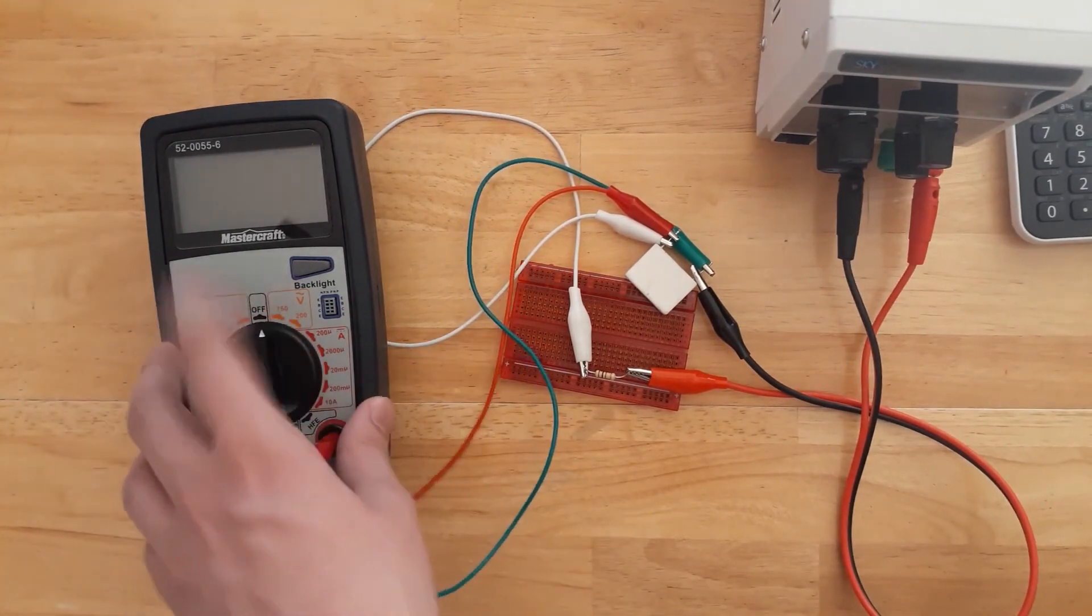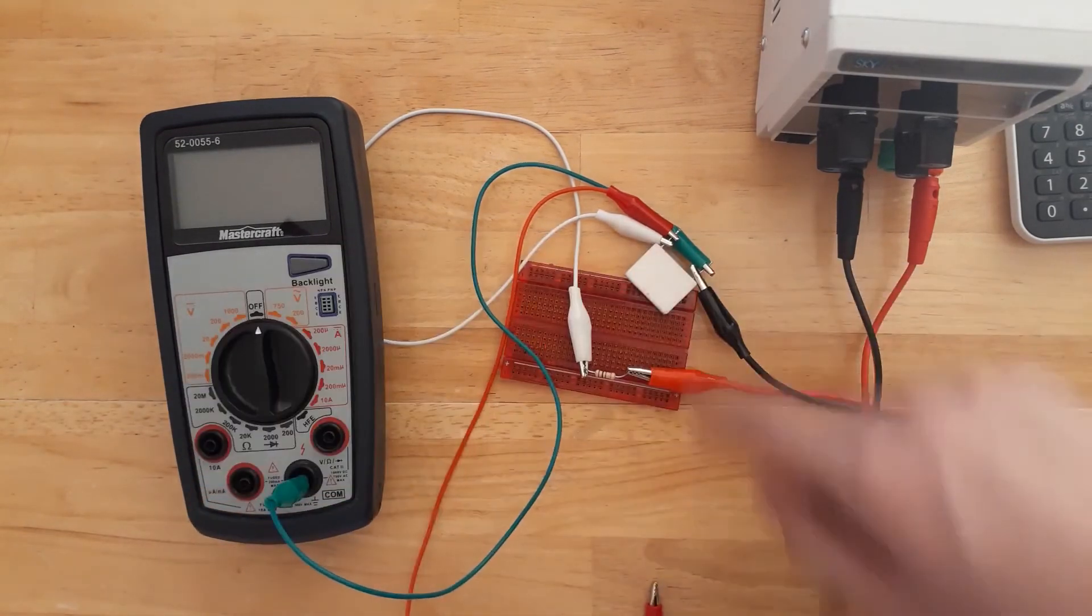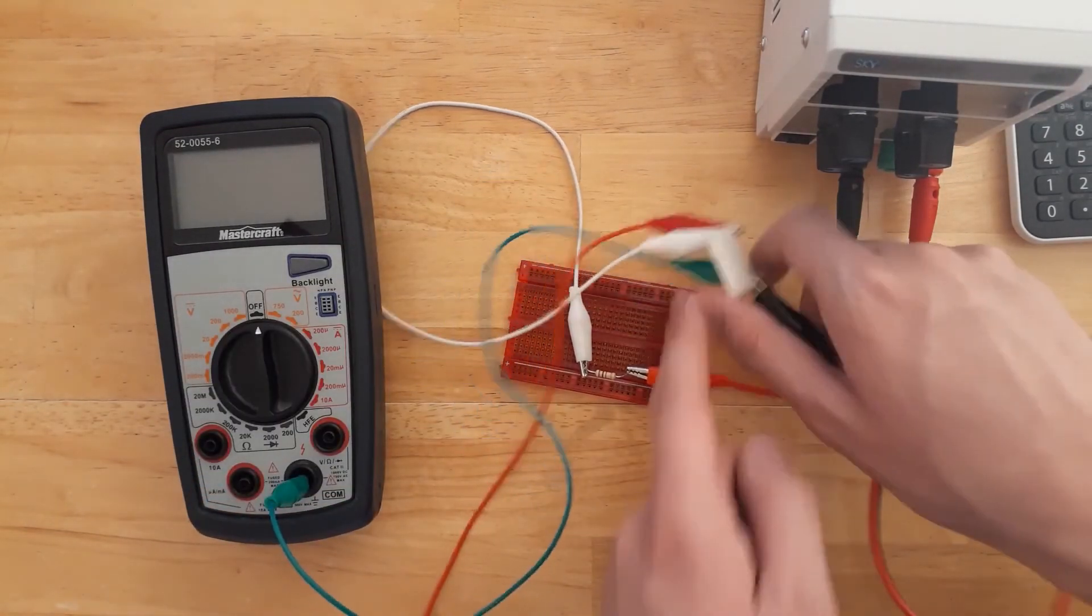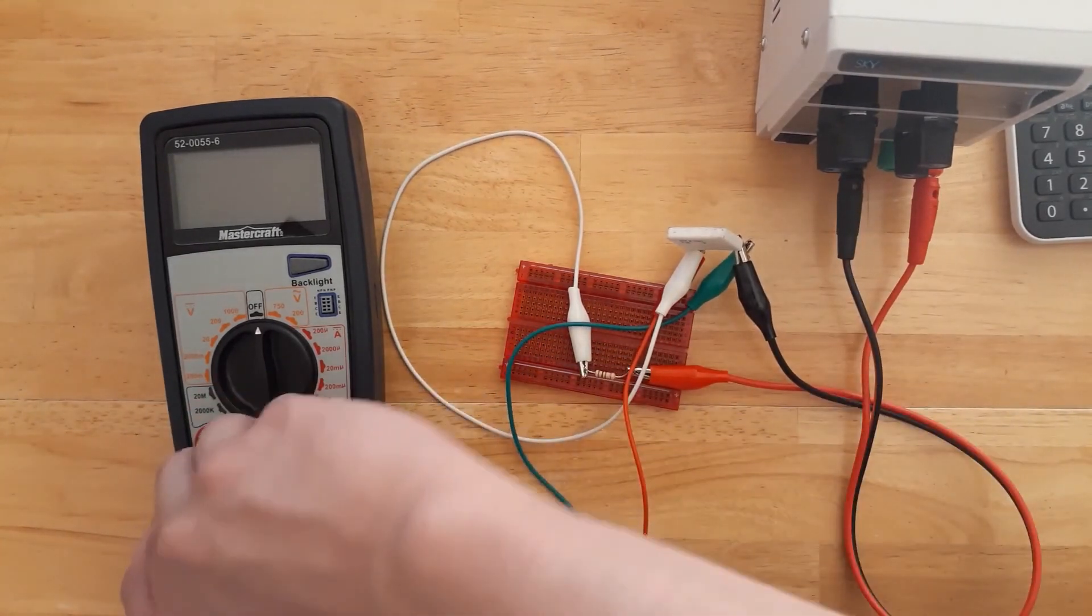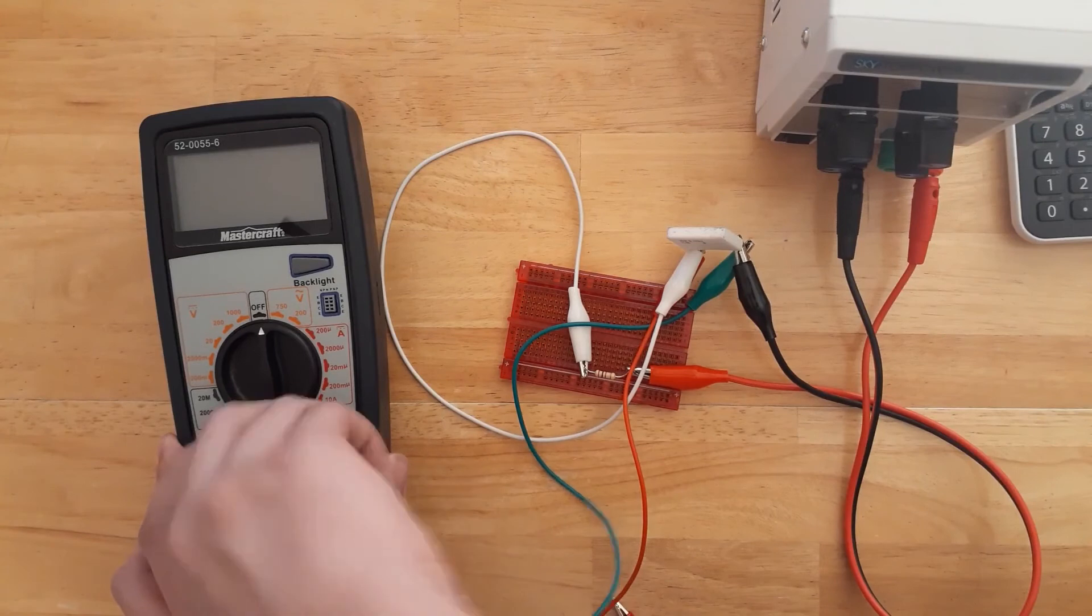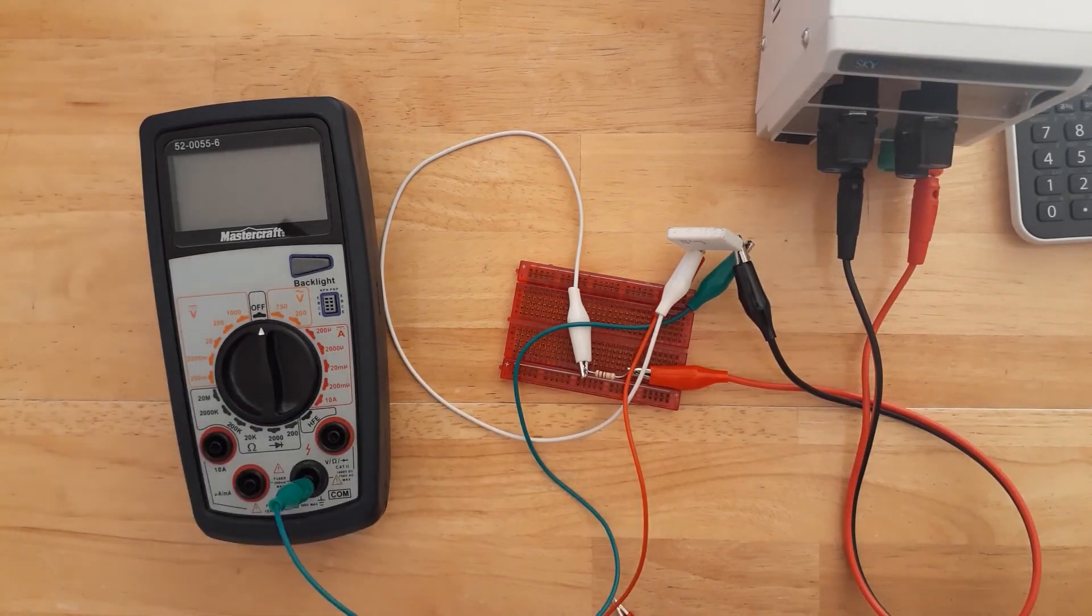Right now I'm going to actually open up this multimeter, and I'm pretty sure we will be able to see something like this, a resistor. Maybe it looks like this, or more something like this but bigger. We're going to open this up and see what resistance it uses as the current shunt. I'll be right back.